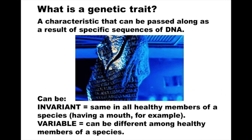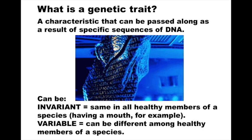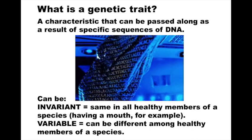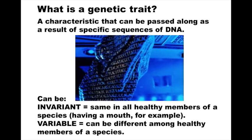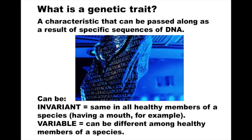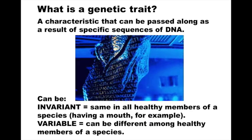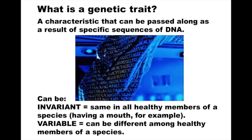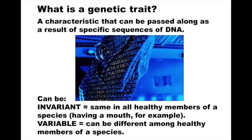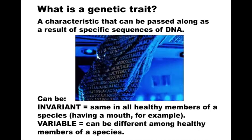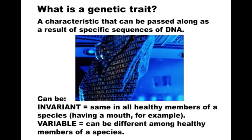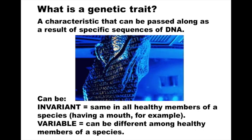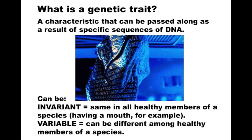What is a genetic trait? It's a characteristic, a feature of a living thing that can be passed along as a result of a specific sequence of DNA. Your DNA sequence determines what genes you have. These are traits that are a result of DNA sequences. They could be invariant — meaning all organisms in the population would have the trait. Some DNA is that way. We're talking about a DNA code.